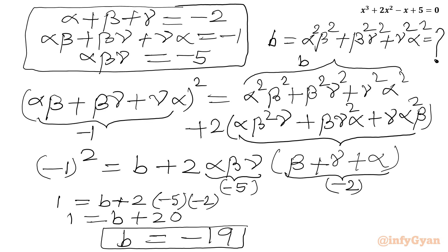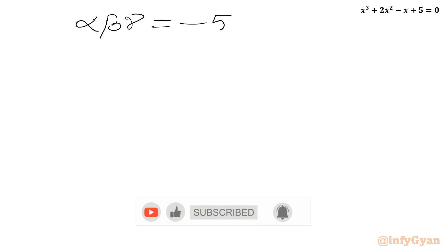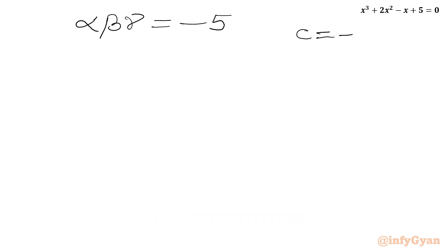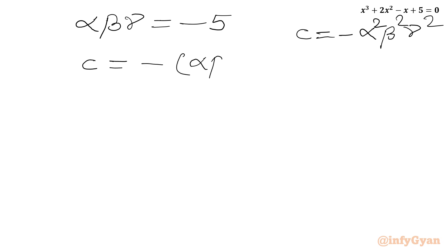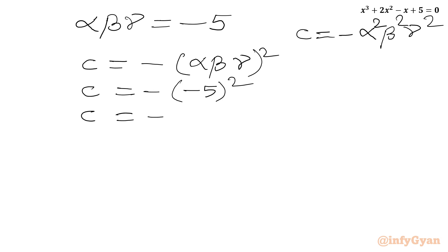Let us find out 'c' also. We know alpha·beta·gamma = -5, and c = minus of alpha²·beta²·gamma² = minus of (alpha·beta·gamma)². So c = -(−5)² = -25.